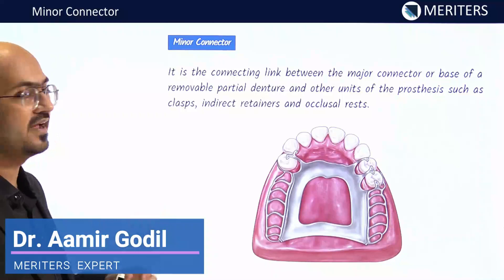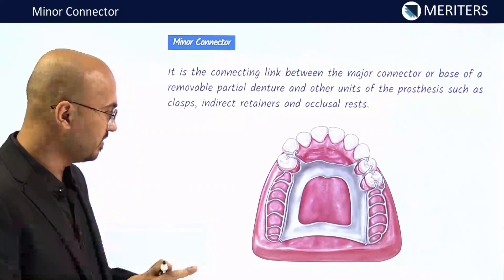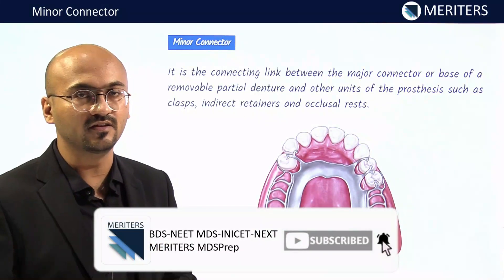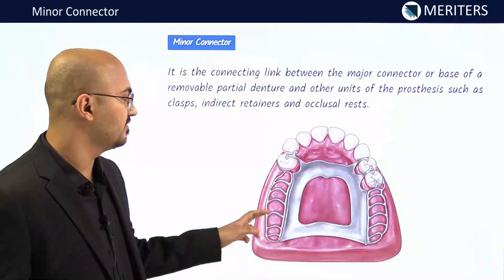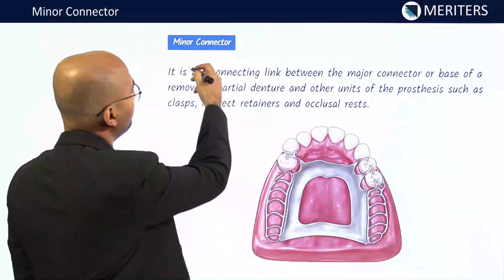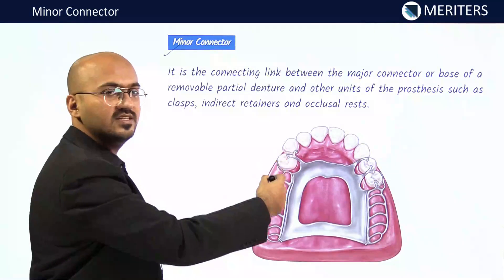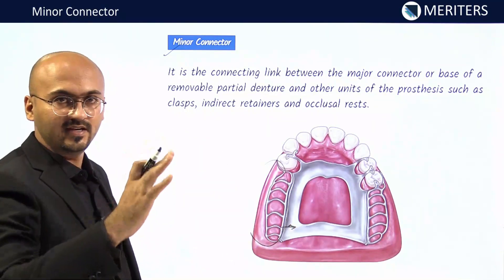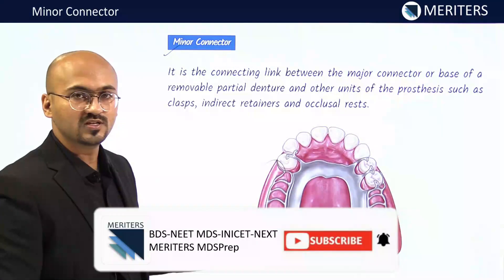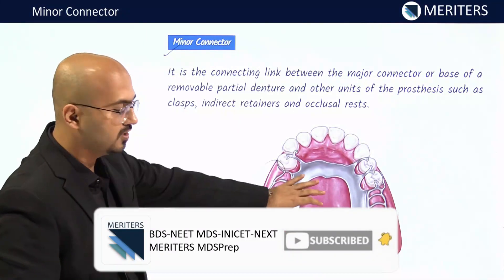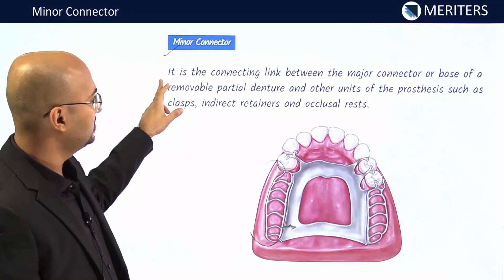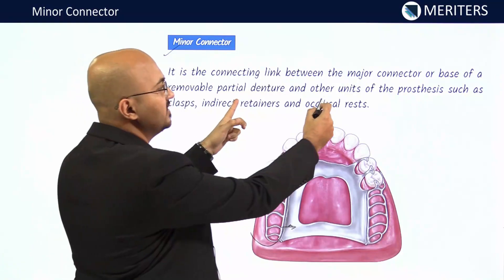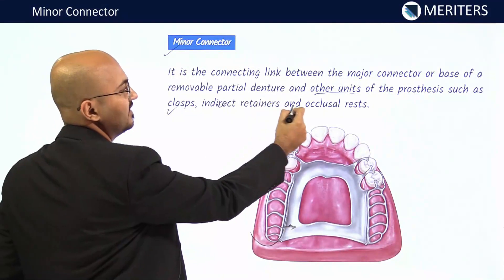In this video we will be studying minor connectors. The components of a cast partial denture include major connector, minor connector, direct retainer, indirect retainer, occlusal and other rest seats, the denture base, and acrylic teeth. The function of a minor connector is to connect all these small components to the major connector — connecting the direct retainer, occlusal rest, and indirect retainer to the major connector. By definition, it is the connecting link between the major connector or the base of a removable partial denture and the other units of the prosthesis such as clasp, indirect retainer, and occlusal rest.